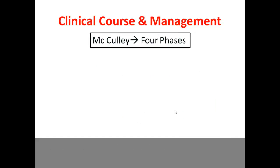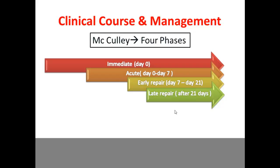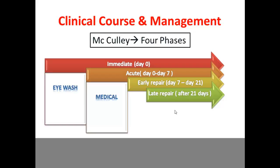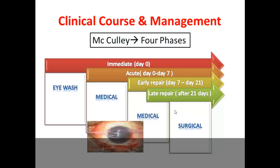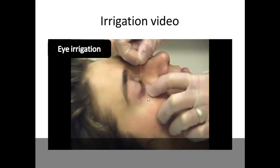Coming to management, Macaulay divided this into four phases: the immediate phase; the acute phase (day 0 to day 7); the early repair phase (day 7 to 21); and the late repair phase (after day 21). In the immediate phase we perform irrigation; in the acute phase, medical treatment; the early repair phase is continuation of medical treatment; and it is in the late repair phase that surgical measures are done — with amniotic membrane transplantation and debridement being the only surgical measures done in the acute and early repair phases.